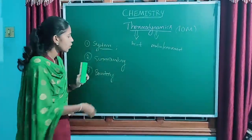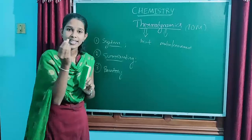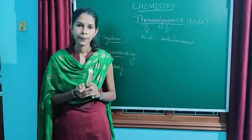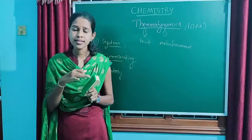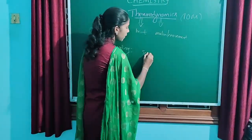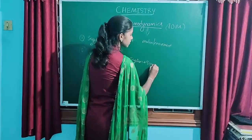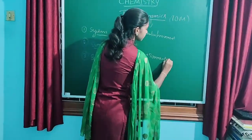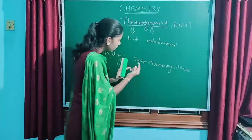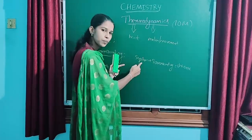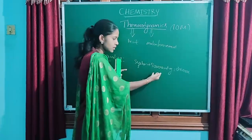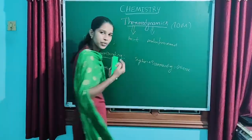If I consider this chalkface for the thermodynamic study, then this chalkface will be our system. Or if I consider this duster for the thermodynamic study, then it will become our system. Any part of the universe which is under thermodynamic study is called system. Now, the surrounding — except the system, the remaining portion of the universe is called surrounding. Everything in this universe constitutes the surrounding. According to thermodynamics, system plus surrounding is equal to universe.